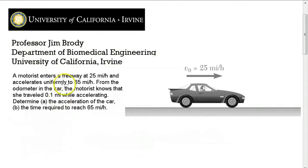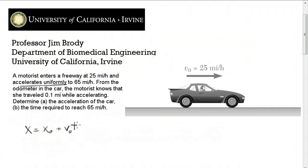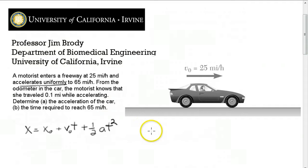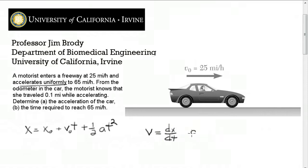Let's start by writing down the equations for uniform acceleration. This is a uniform acceleration problem. We know that x equals its initial position plus some initial velocity times time plus one-half times the acceleration, which is a constant number, times time squared. We also know that the velocity is the time derivative of x and the acceleration is the time derivative of the velocity.